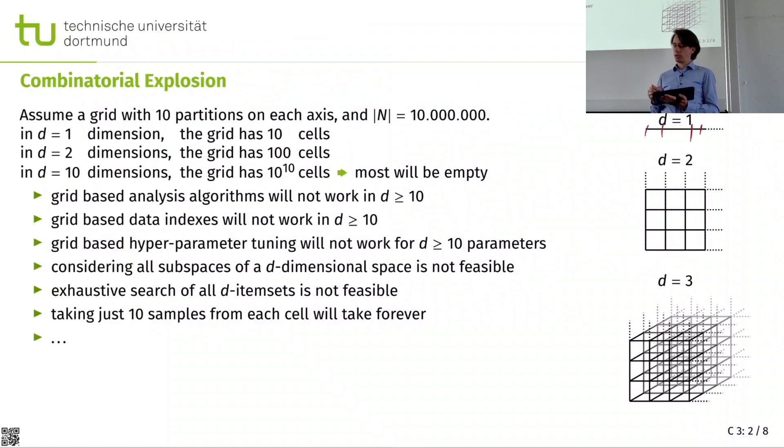If I have a two dimensional data space and I want to make 10 buckets in each dimension, I get 100 buckets. That is still something I can probably manage on my computer. But once I have 10 dimensions and I want to make 10 buckets in each dimension, I have 10 to the power of 10 such buckets. But I probably don't have 10 to the power of 10 data points. So in most of these cells, there won't be any data.